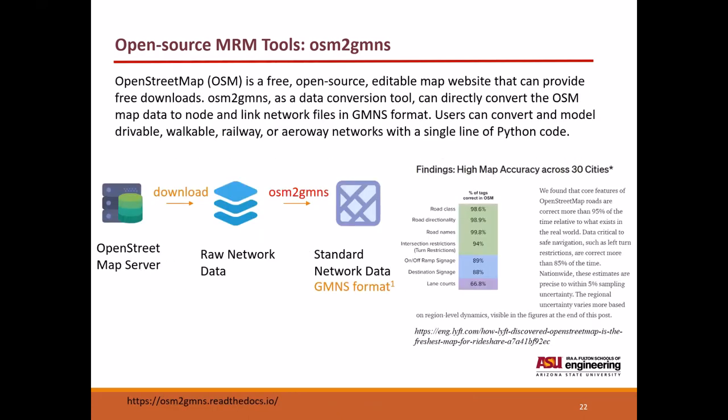OpenStreetMap is a free open source editable map website that can provide free downloads. OSM2GMNS as a data conversion tool can directly convert the OpenStreetMap data to node and link network files in GMNS format. Users can convert and model drivable, walkable, railway, or airway networks with a single line of Python code.